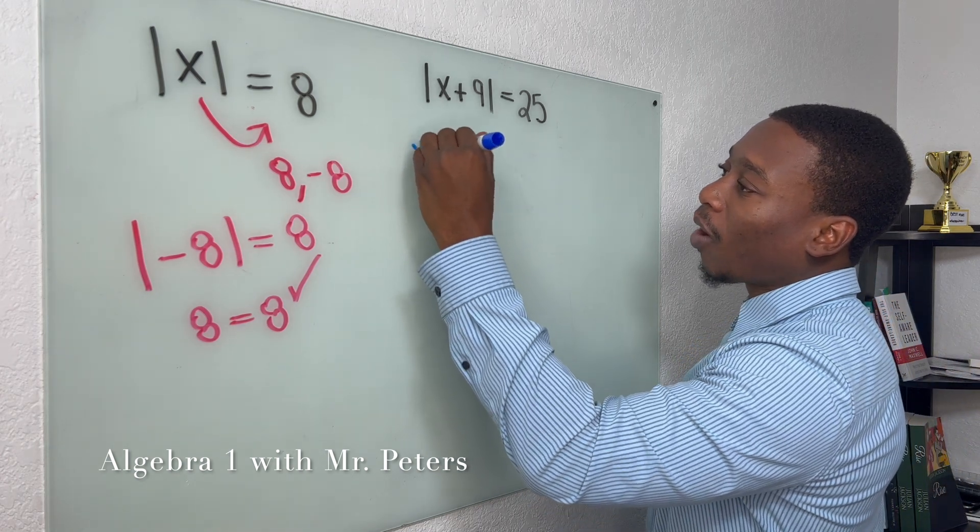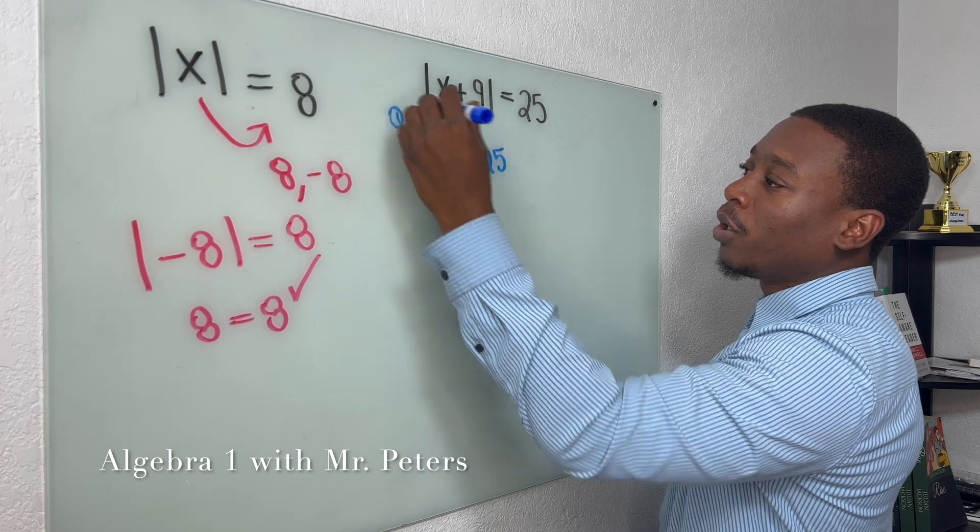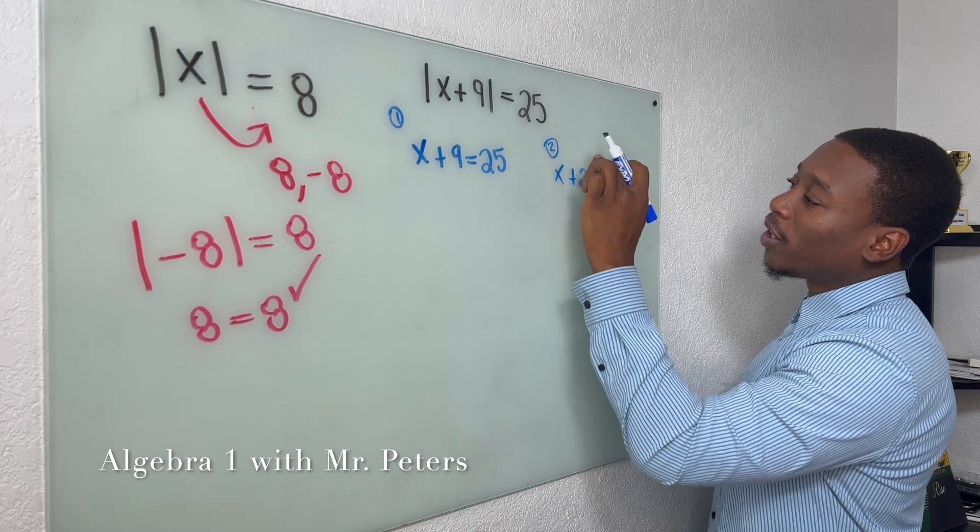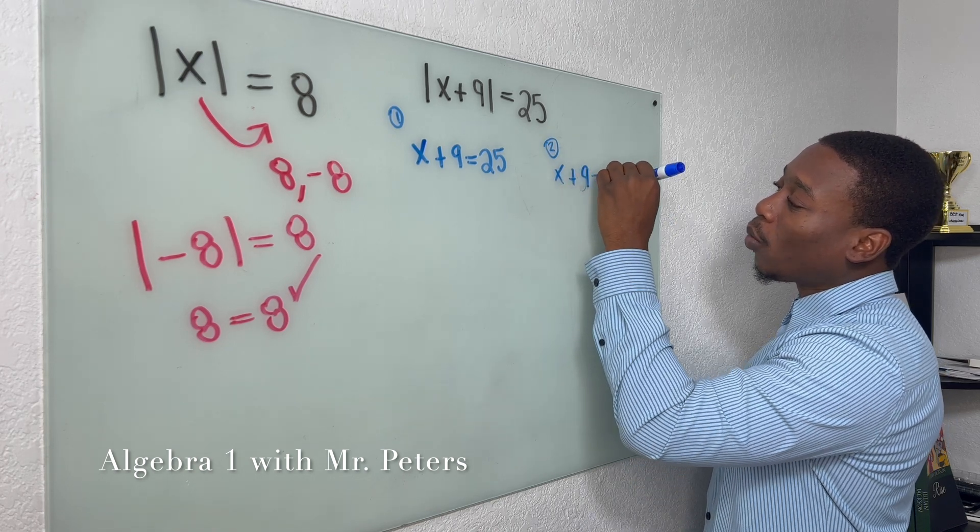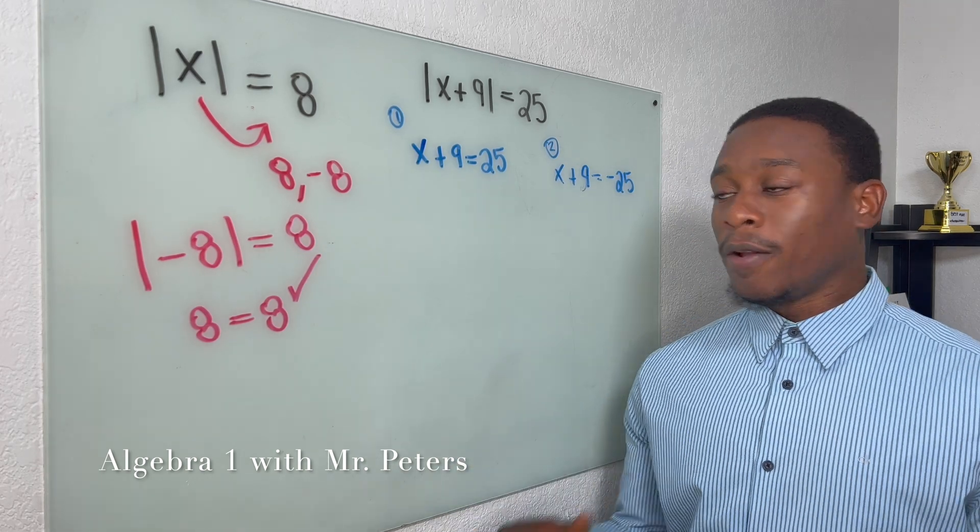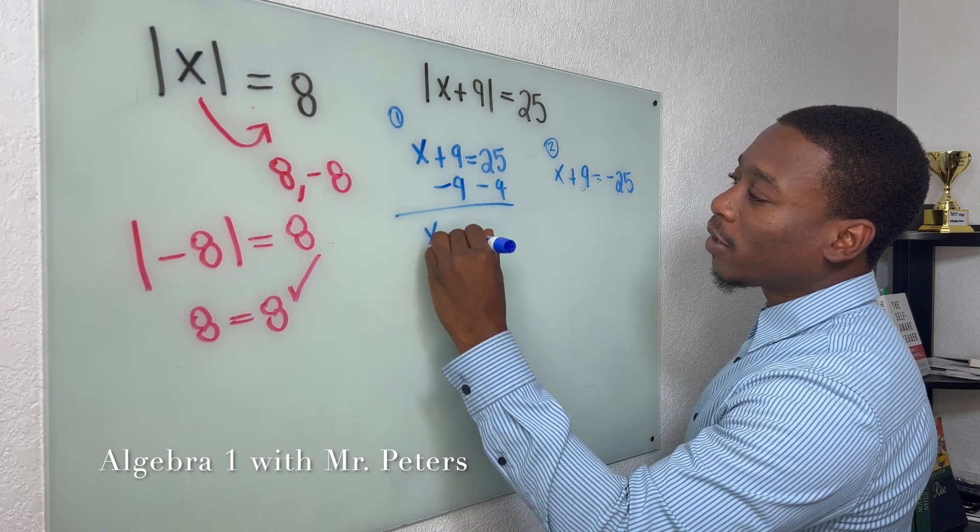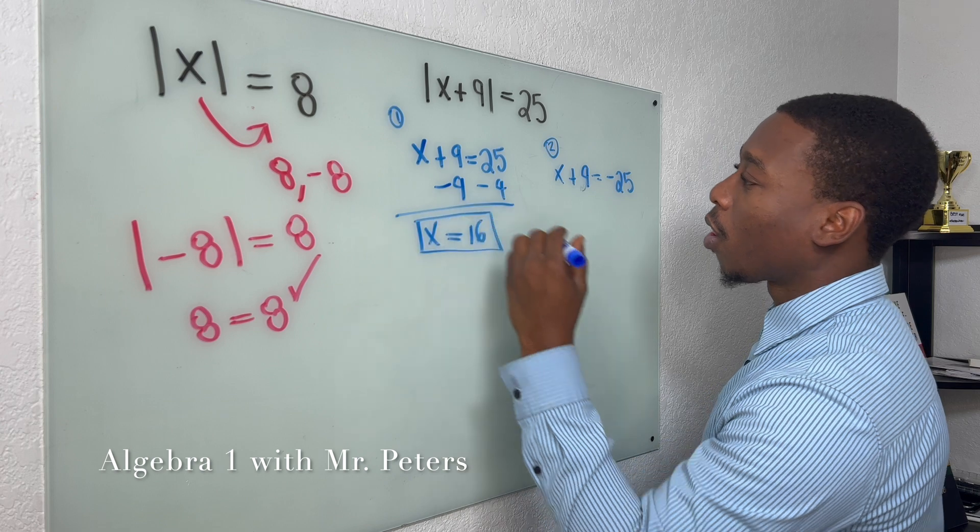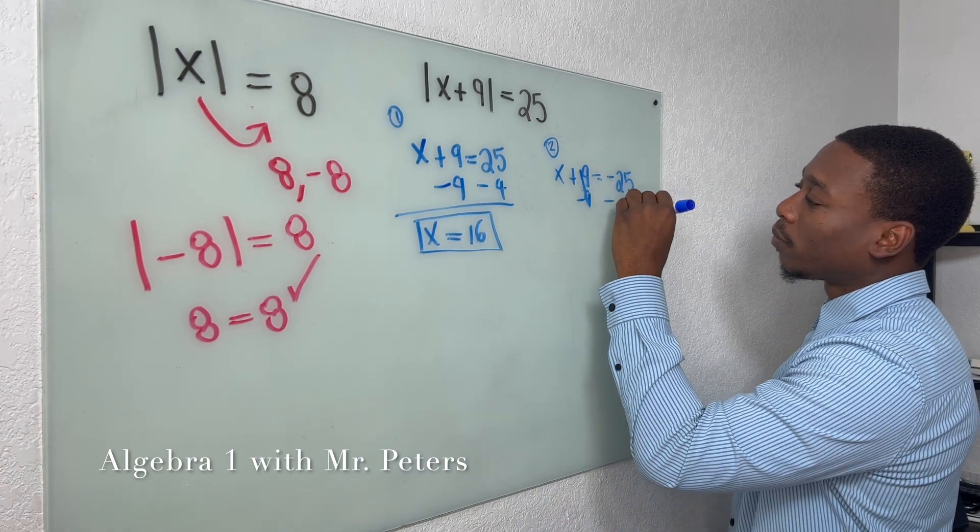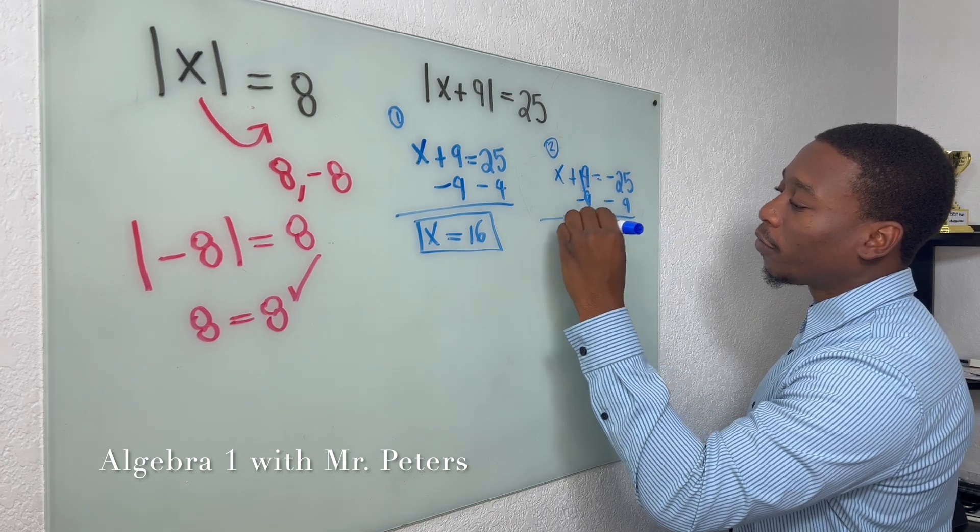We're going to drop the brackets and rewrite the equation. So this is equation number one, and then for equation number two we're going to rewrite it, but now it's going to be equal to a negative 25. Now we solve like a regular equation and once we do, we're going to have x is equal to 16 or x is going to be equal to negative 34.